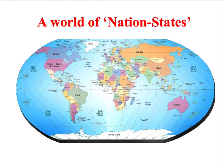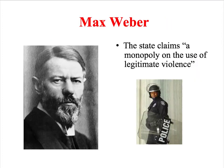Nation states are political and legal entities that operate within specific boundaries. They have borders, clearly defined territory, and a central government which exercises control over the population within these boundaries. Nation states can pass legislation — that is, they can pass laws — and they can raise taxes from their population. Also, as Max Weber famously argued, the state claims a monopoly on the use of legitimate violence within its boundaries. In other words, the state has an important role to play in maintaining order and security.